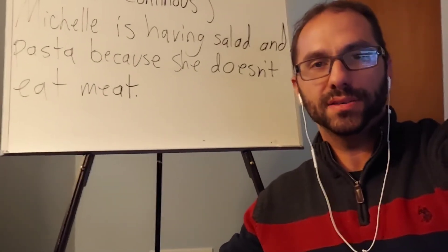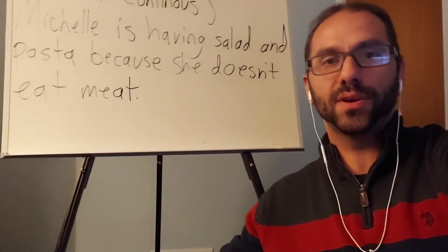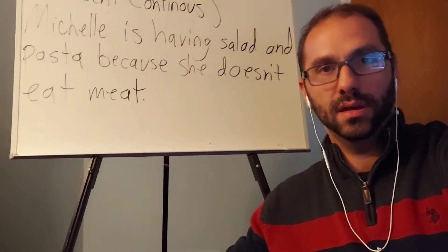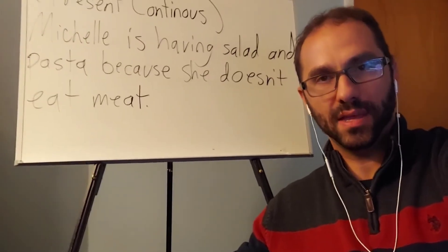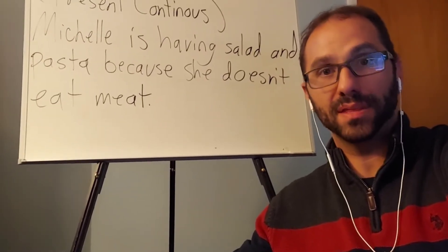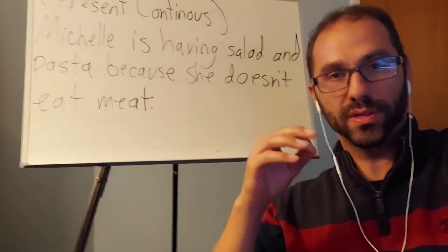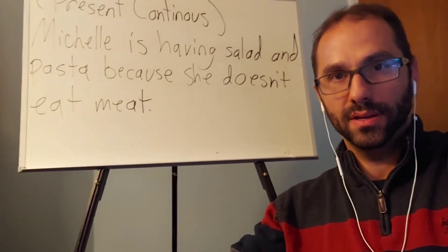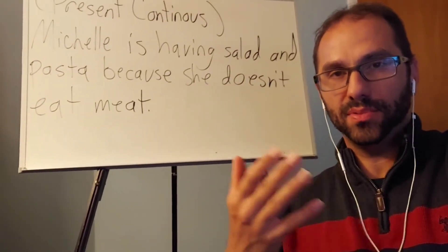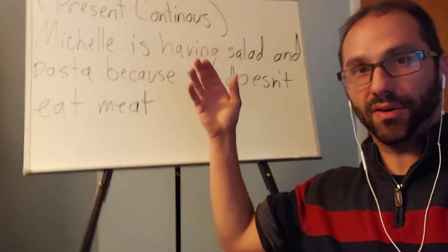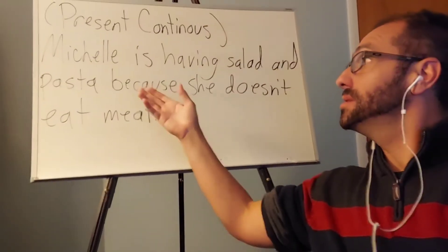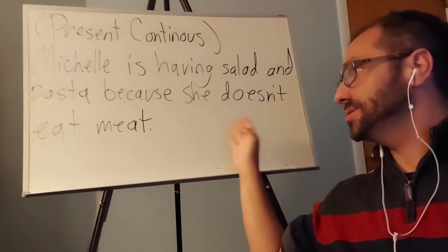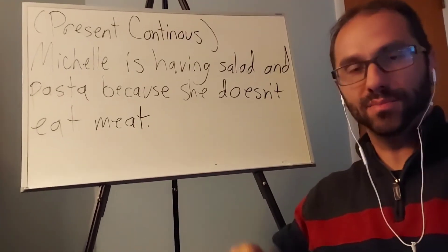The following is an example of present continuous tense. Present continuous can describe something happening at the current point in time, right when it's being described. In this sample sentence, it says: Michelle is having salad and pasta because she does not eat meat.